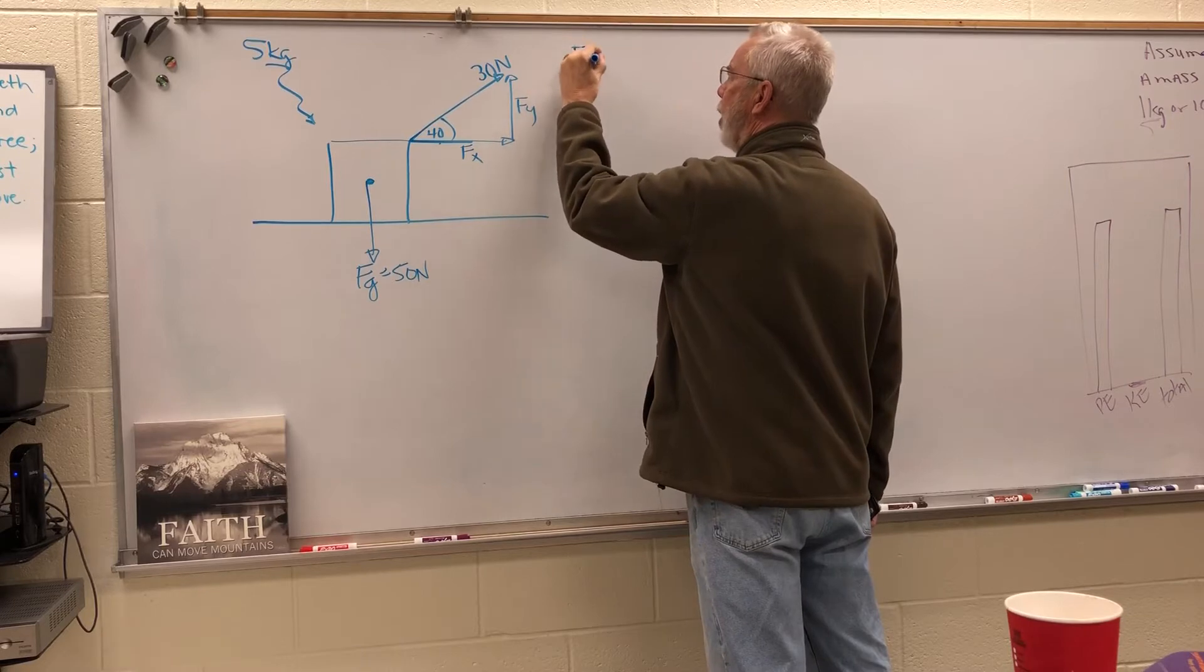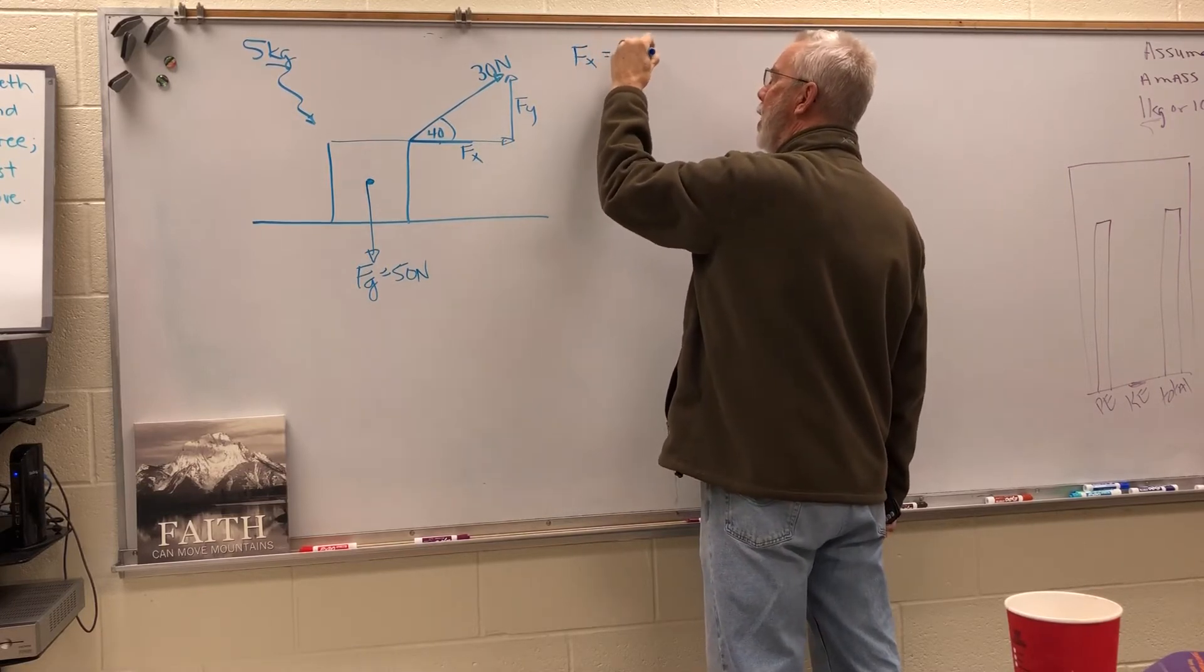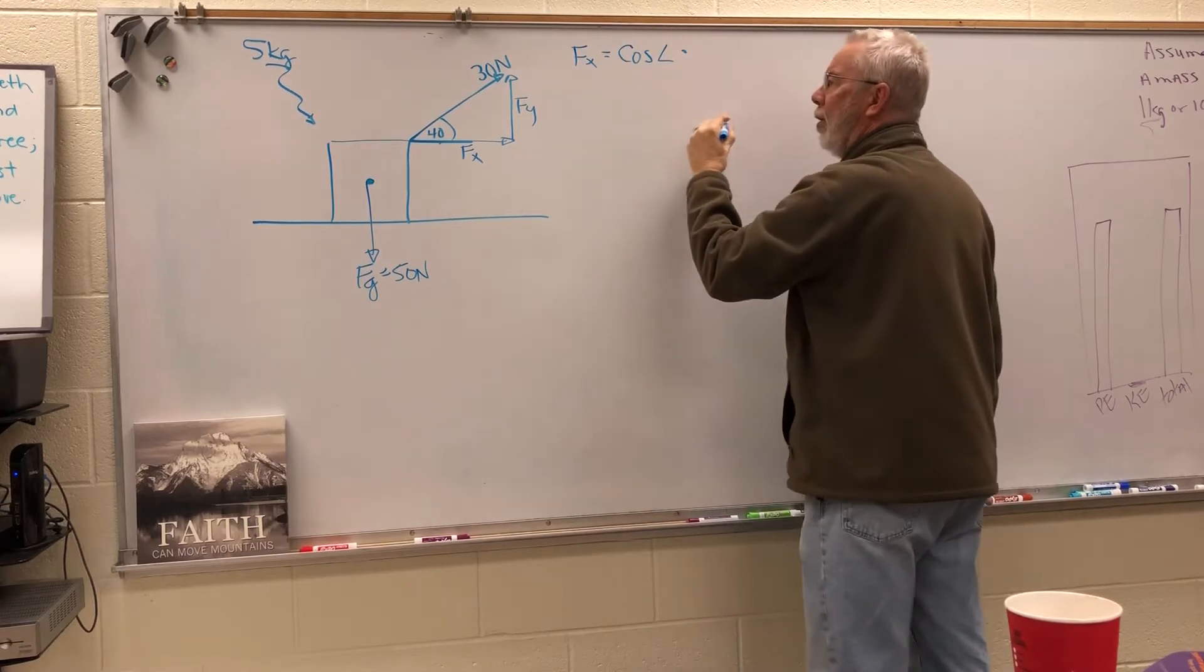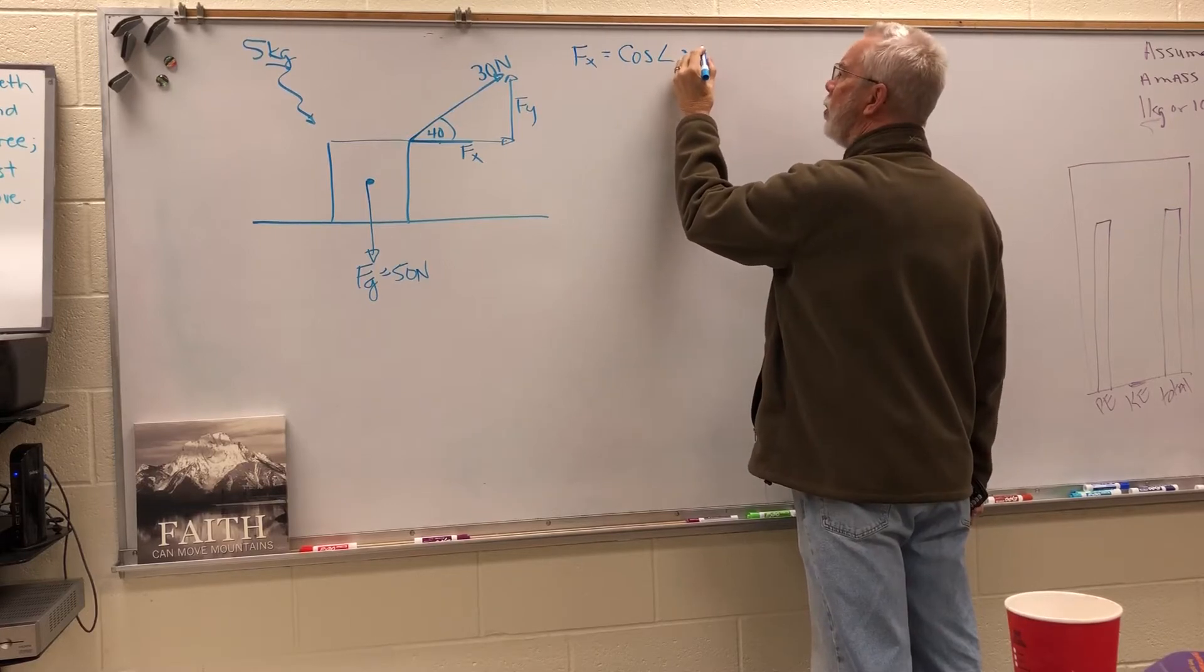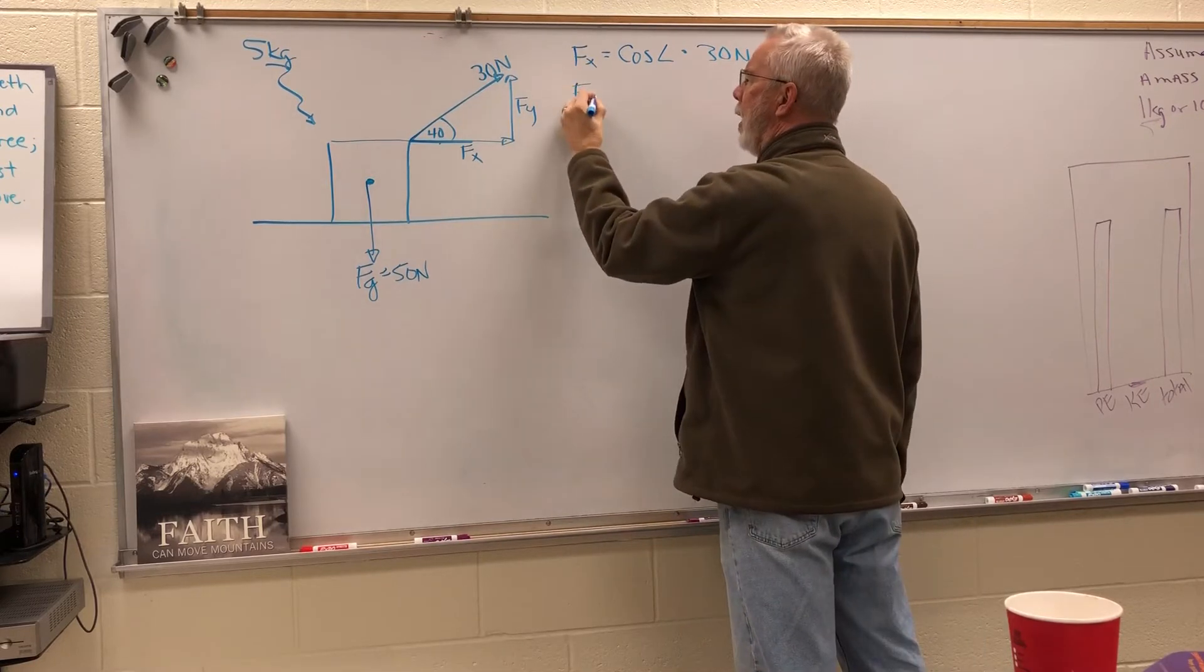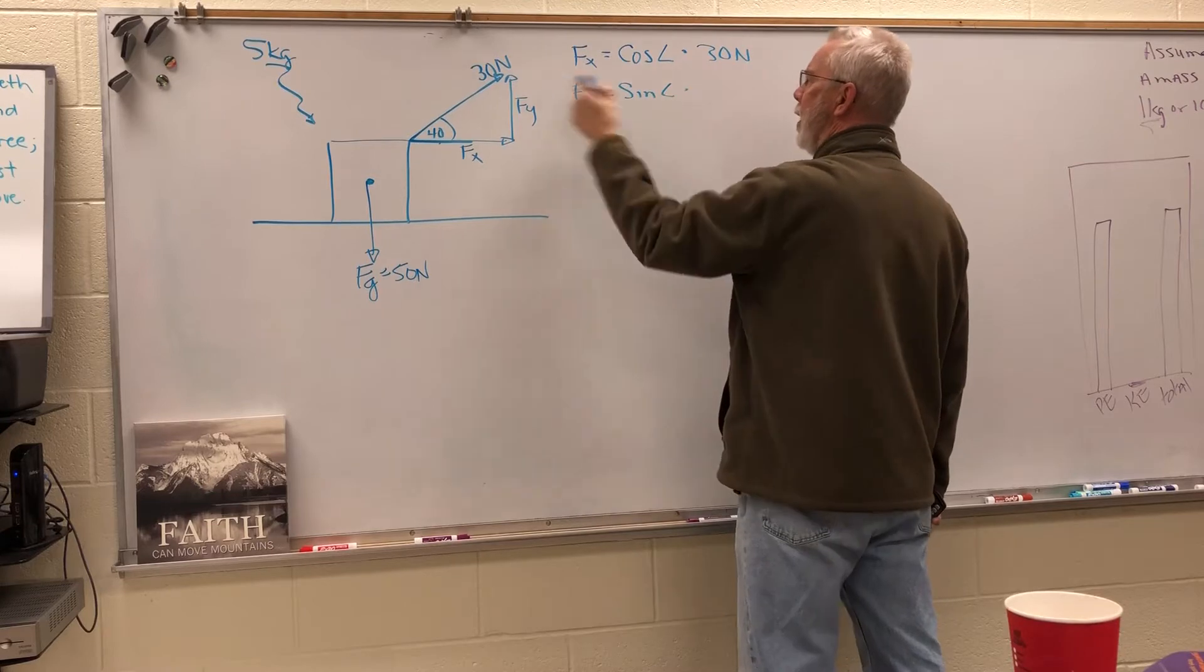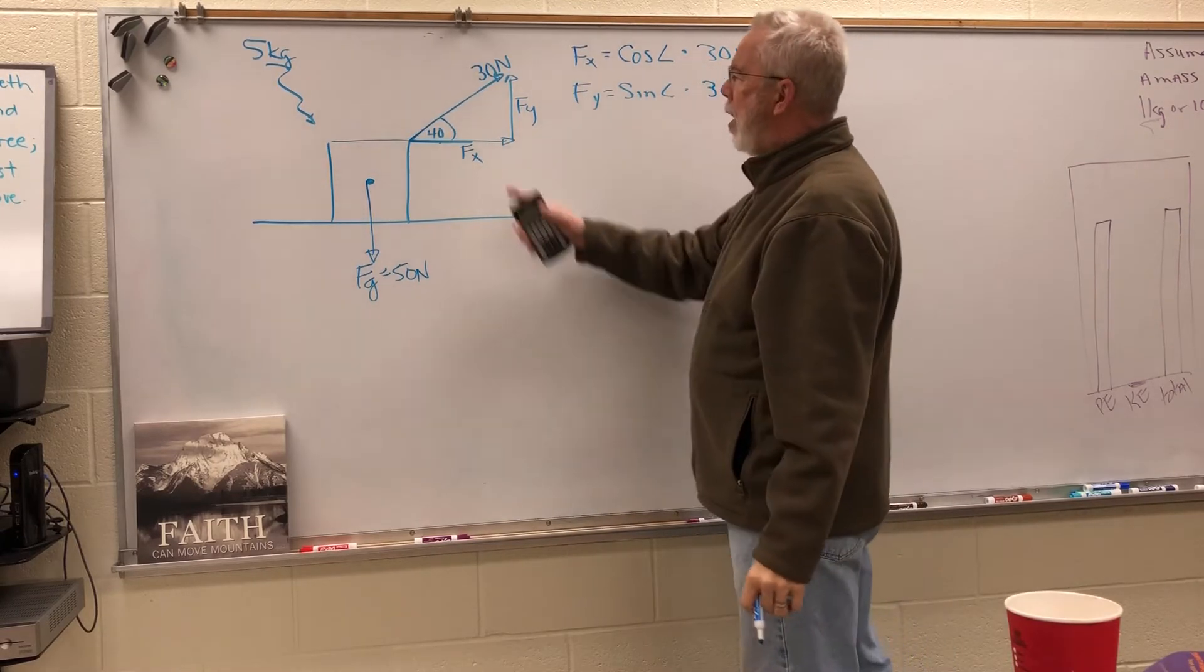One of the ways that you solve this problem is that F of x is always going to be equal to the cosine of the angle times the initial force or the force on the hypotenuse, which would be in this situation 30 newtons. And F of y is going to be the sine of the angle times the initial force of 30 newtons.